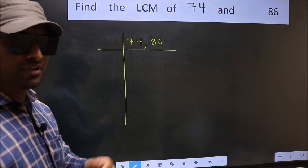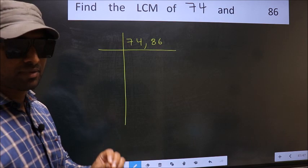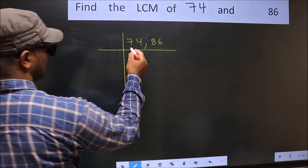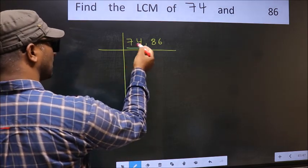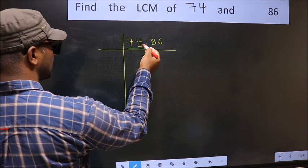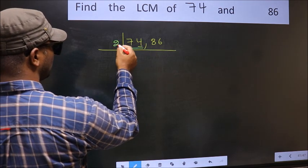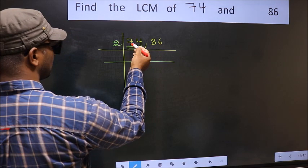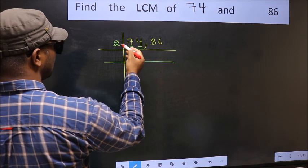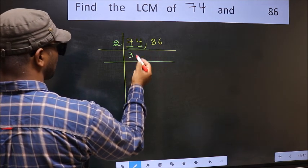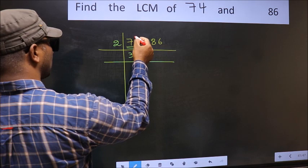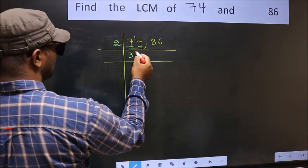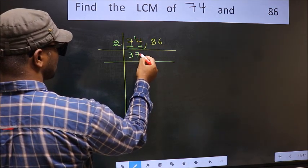Now focus on the first number, which is 74. The last digit is 4, so it is even — take 2. A number close to 7 in the 2 times table is 6. 7 minus 6 is 1, carry 1 forward to get 14. 2 sevens are 14, so 74 divided by 2 gives 37.